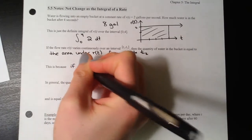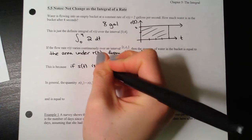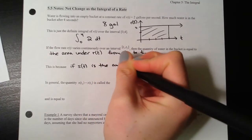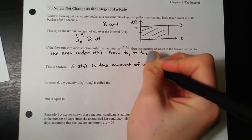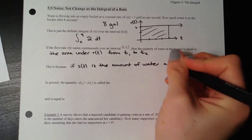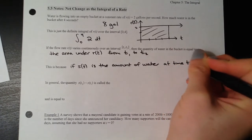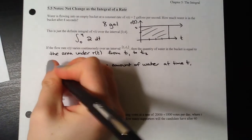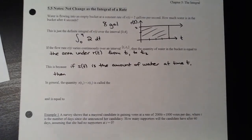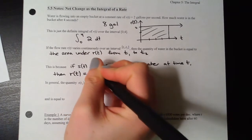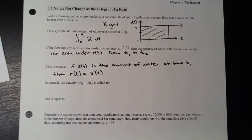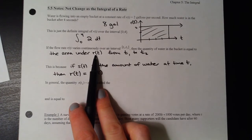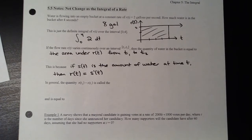Let s(t) be the amount of water at time t, and r is the rate. The rate r is actually s-prime — it's the derivative of the amount. Just like velocity is the derivative of position. So if r is the derivative of s, that means s — the amount — is the integral of the rates. Those relationships go back and forth: if velocity is the derivative of position, position is the antiderivative of velocity.